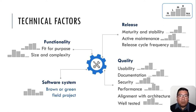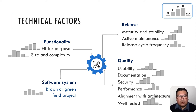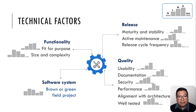Regarding release, most agree that maturity, stability, and active maintenance are quite relevant factors in the selection process, as well as quality aspects like usability, documentation, security, performance, alignment with architecture, and whether the library is well tested. One important thing to highlight is that the type of software system makes a difference. Having a brownfield or greenfield project limits or gives more freedom in the decision space for selecting a library. A greenfield project — starting from scratch — has no limitations in library selection, while a brownfield project is constrained by the technology stack already decided and guiding the software architecture.